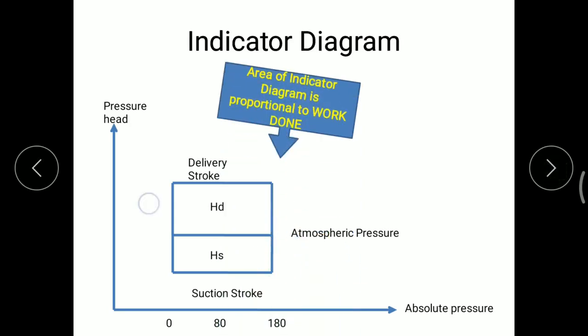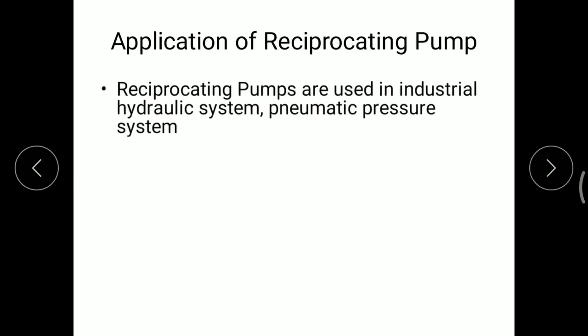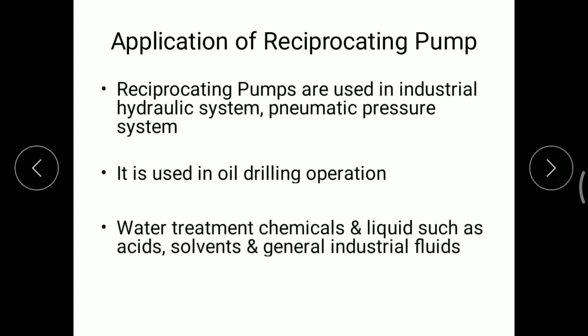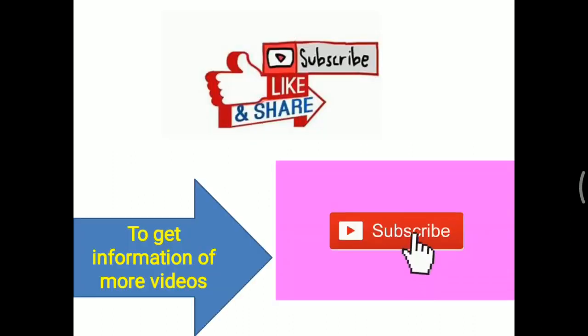The area of the indicator diagram is proportional to the work done by the pump. Now, the applications of a reciprocating pump: first, reciprocating pumps are used in industrial hydraulic and pneumatic systems; they are used for oil drilling operations, water treatment, and chemical plants.